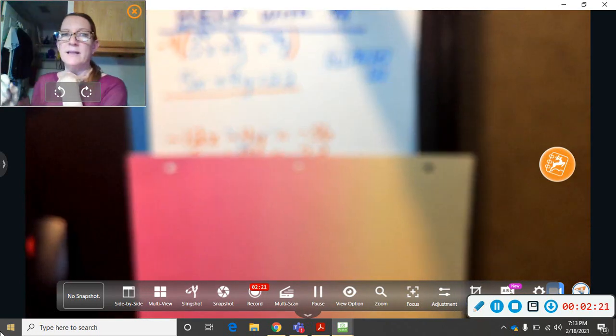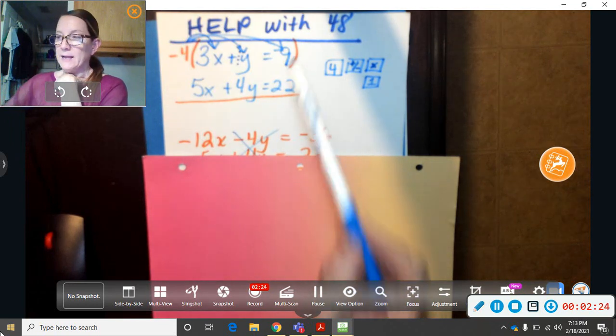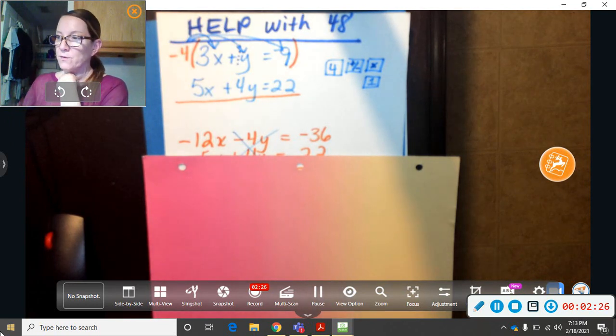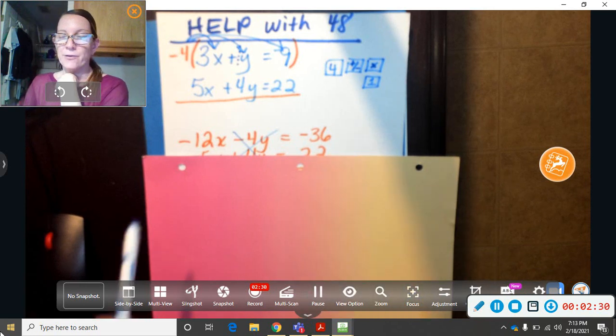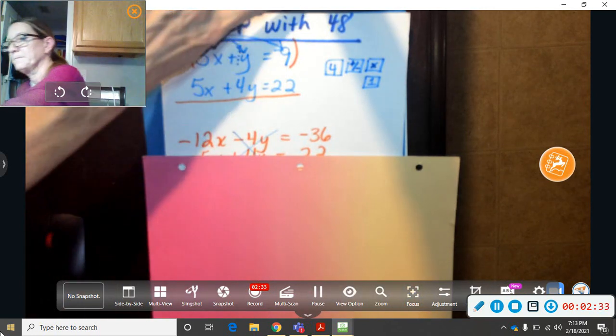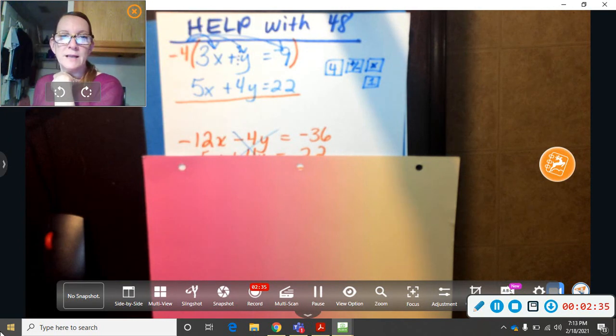Next is negative 4 times the 9. Negative 4 times the 9, that would be negative 36. So in the calculator again, do 4 negative times 9. 4 negative times 9.